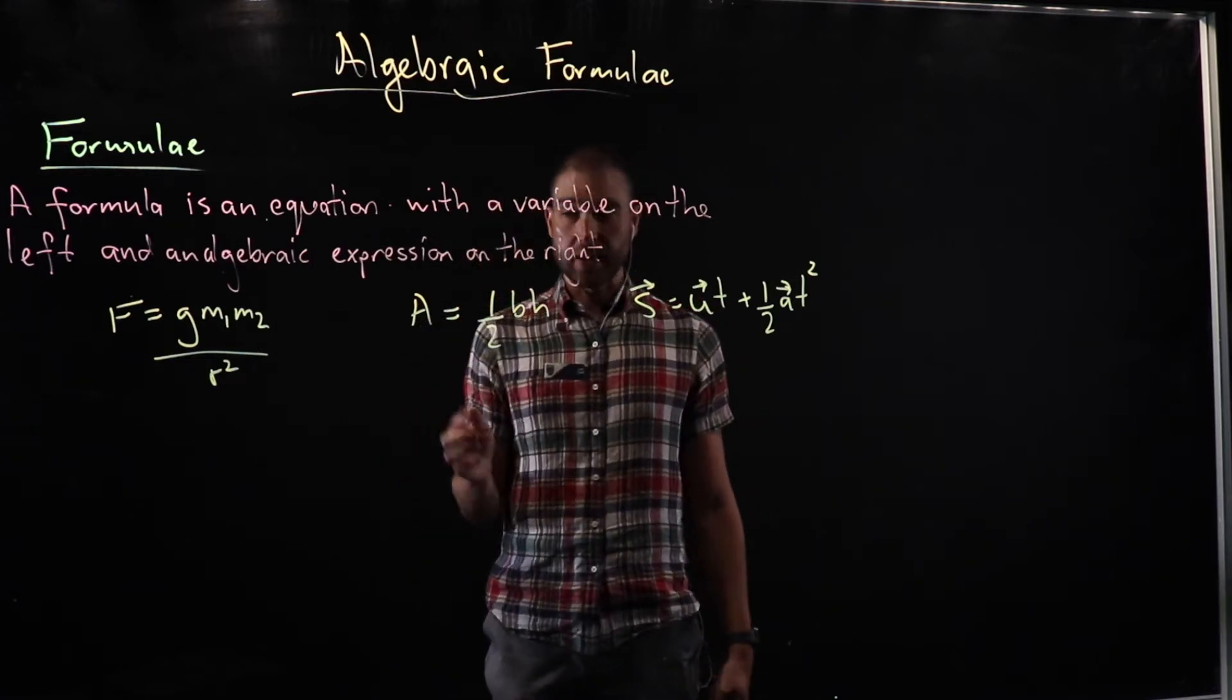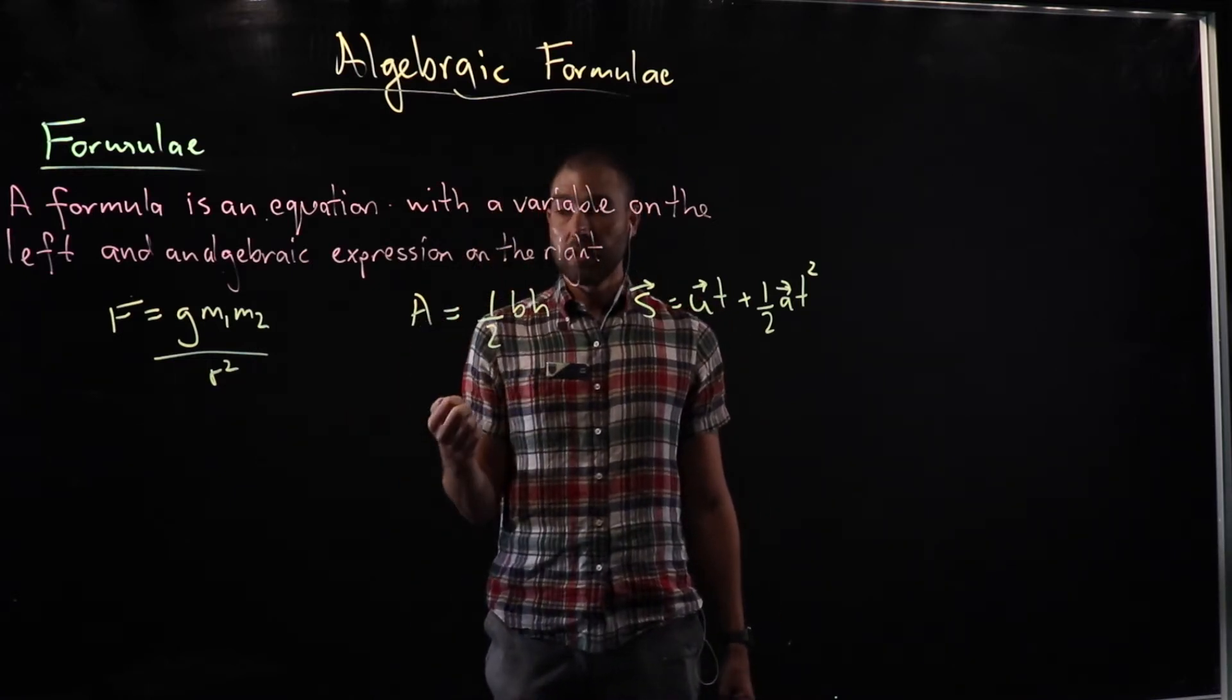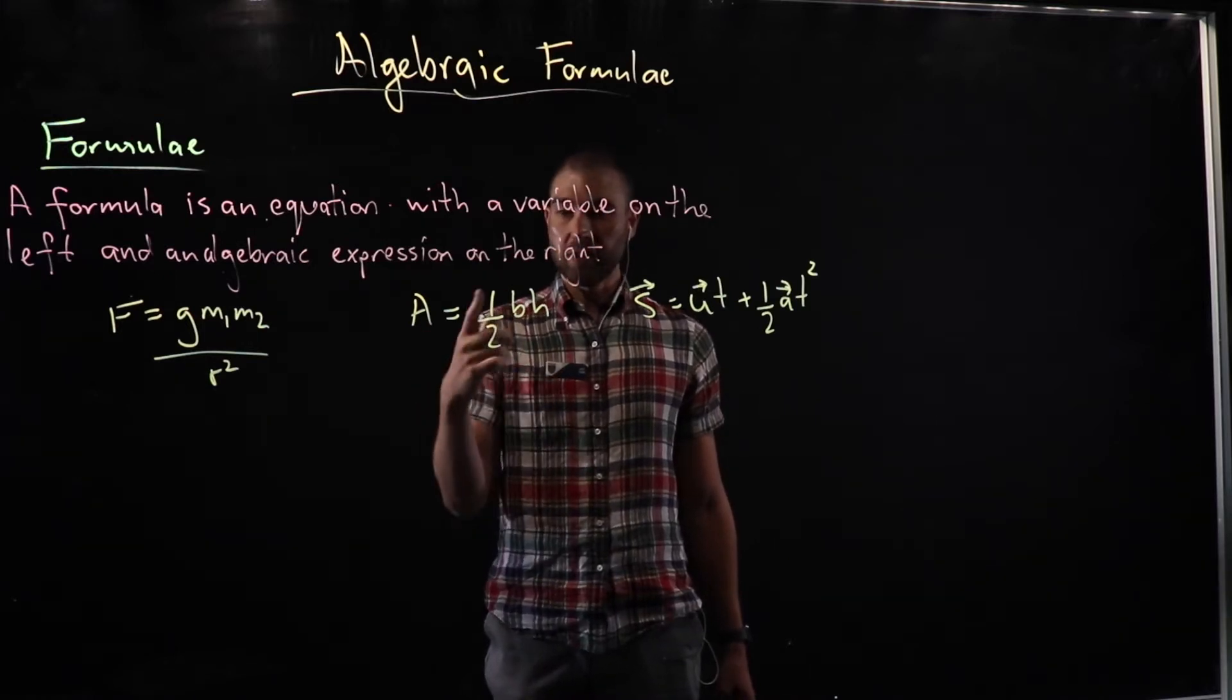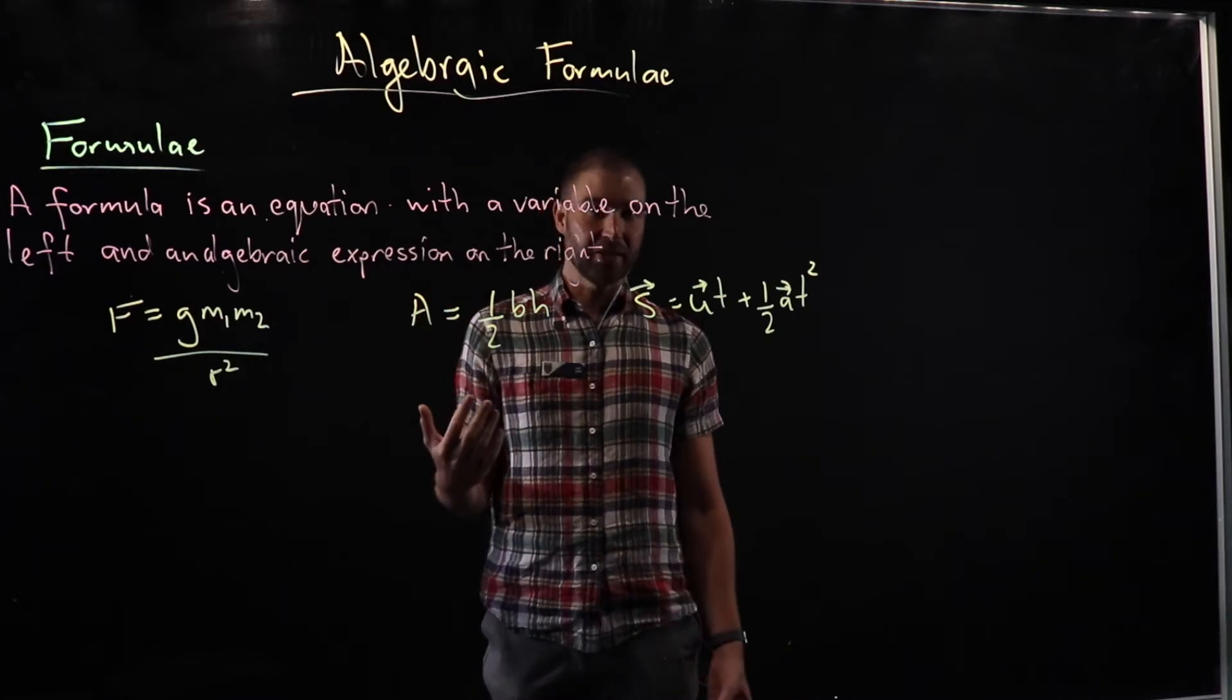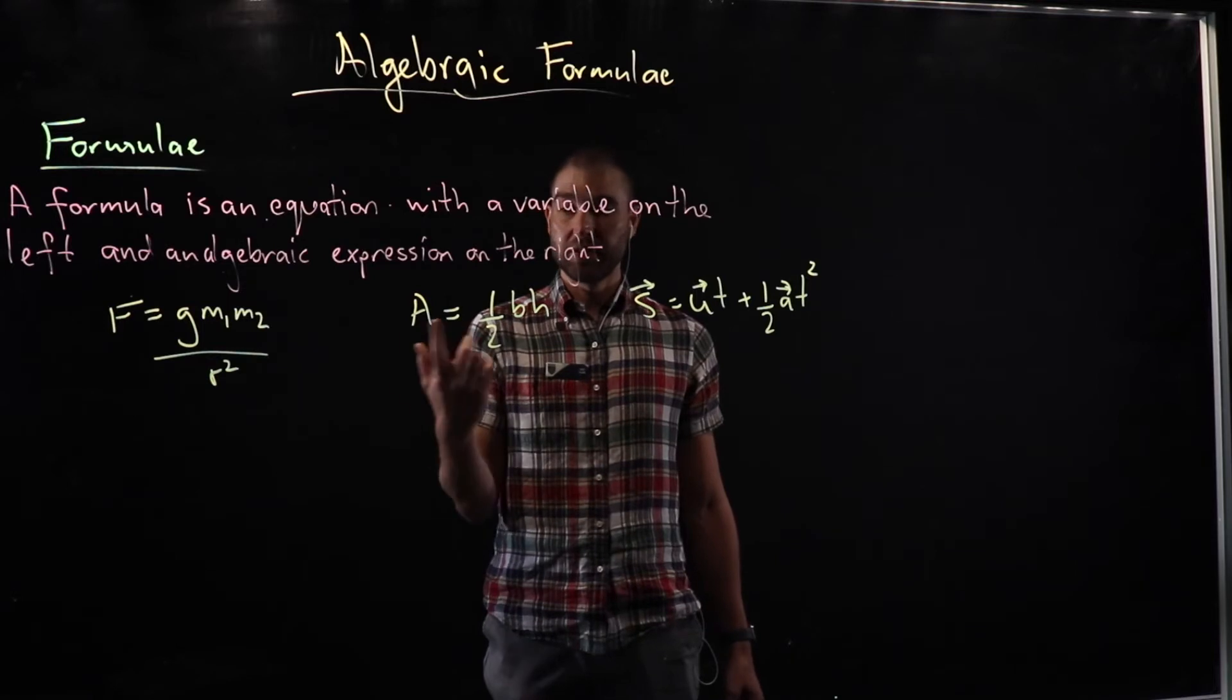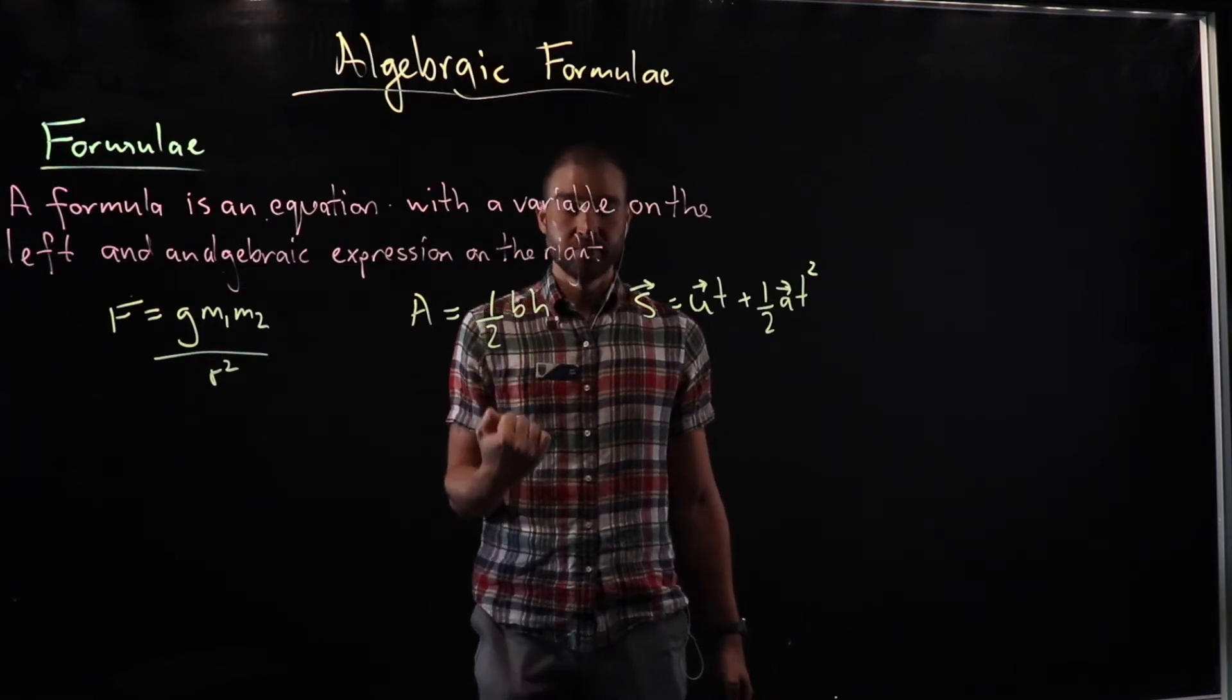Here's one you might have seen in maths: A equals half bh. This is how we figure out the area of a triangle. A triangle is basically half a rectangle, and to figure out the area of a rectangle, you multiply your base by your height. So a triangle is half that.